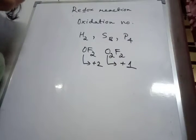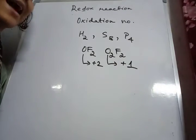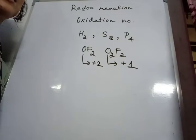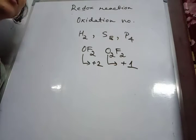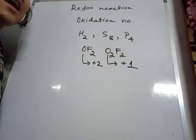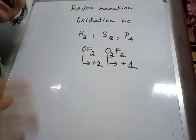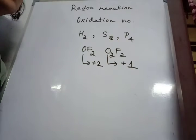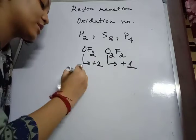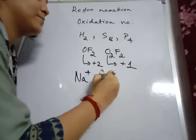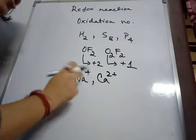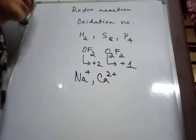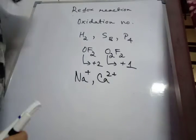In case of a complex ion, the sum of the oxidation numbers of the atoms present is equal to the net charge on it. In case of neutral molecules, the sum of the oxidation numbers of the atoms present is equal to zero. The oxidation number of an ion is equal to the charge present on it — for example, the oxidation number of sodium is plus one and the oxidation number of calcium is plus two. These are the few rules by which we can calculate the oxidation number.